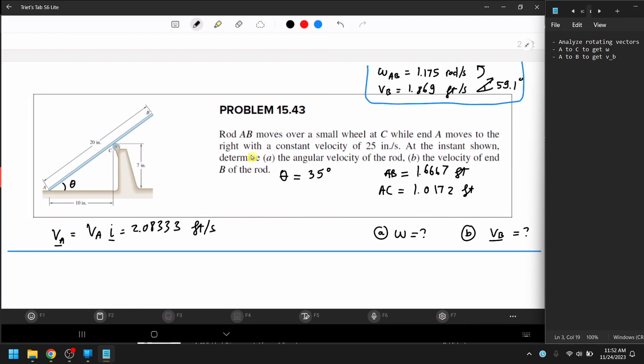You also have, it's given velocity, constant velocity is 25 inch per second of A moving to the right in the i direction, and I convert it into feet per second to be 2.08333. And it asks for A, the angular velocity of the rod, the angular velocity omega, and it asks for B, the velocity of the end of the B of the rod, so the velocity at point B.